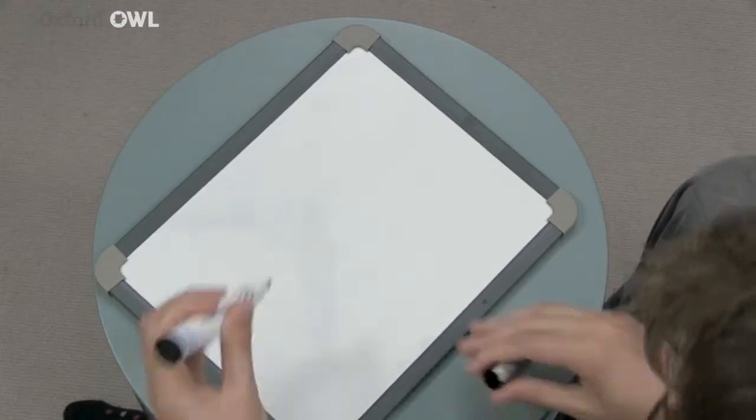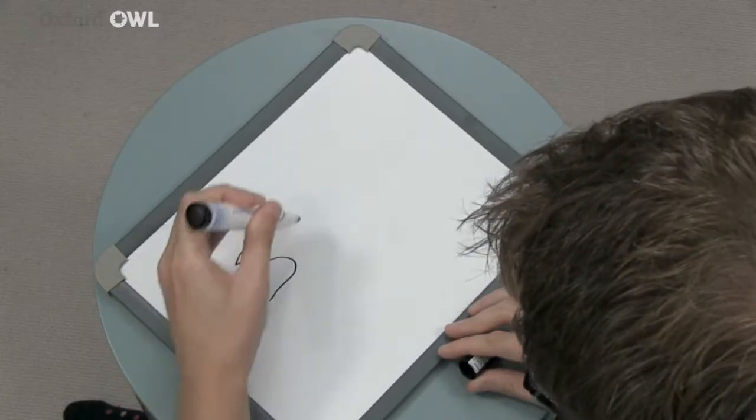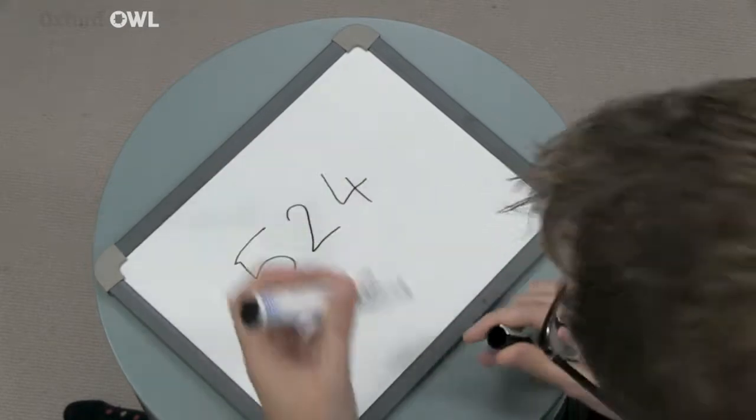Place value means the position of a digit in the number shows its value. If we look at the number 524, we can see that the digit 5 is in the hundreds place, which means it has a value of 5 lots of 100 — 500.